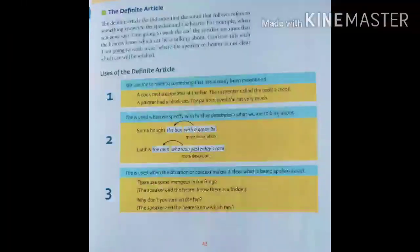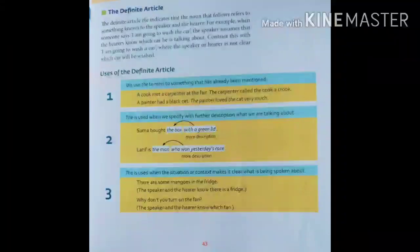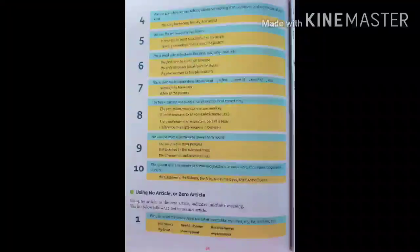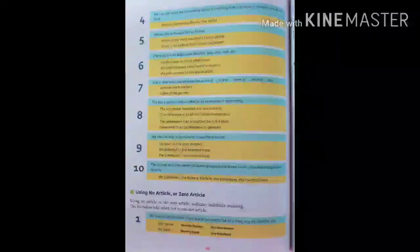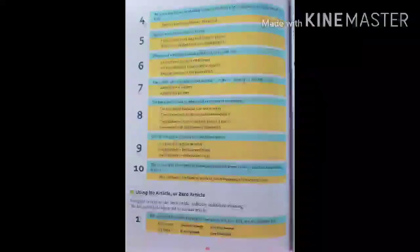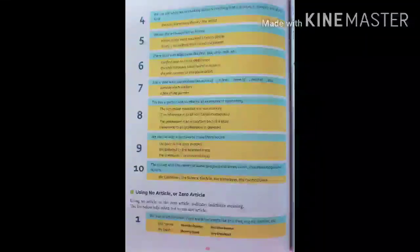Second point: THE is used when we specify with further description what we are talking about. Example: Shoma bought the box with a green lid. Here, which box did Shoma buy? More description is given — 'with a green lid'. Third point: THE is used when the situation or context makes it clear what is being spoken about. Example: there are some mangoes in the fridge. The speaker and hearer both know there is a fridge. Why don't you turn on the fan? Here, both know which fan is to be turned on.